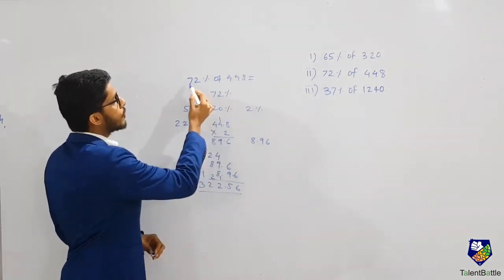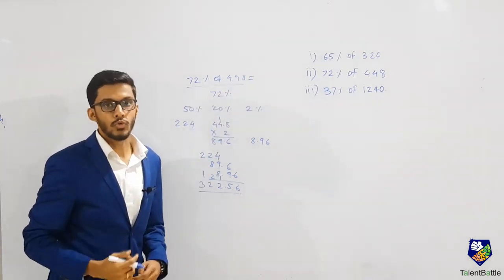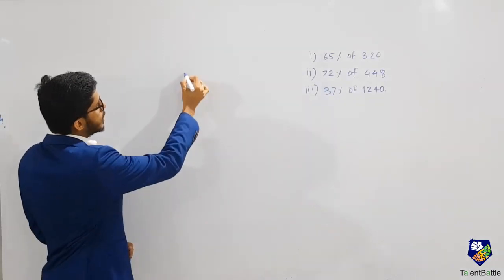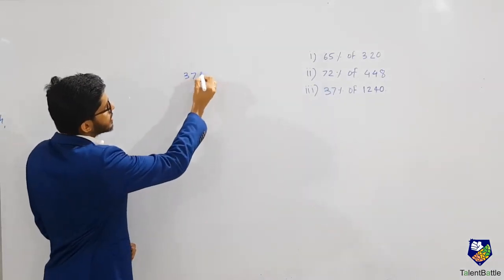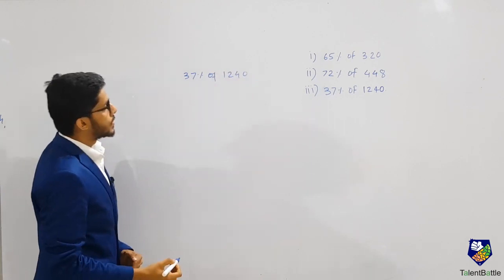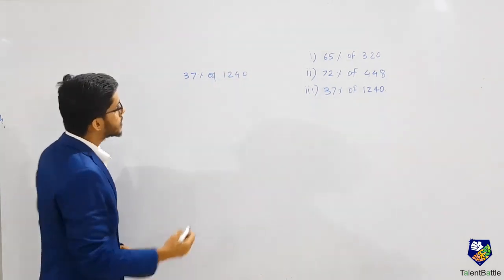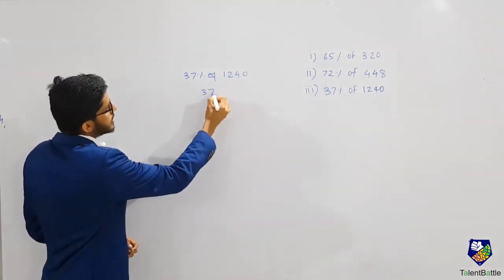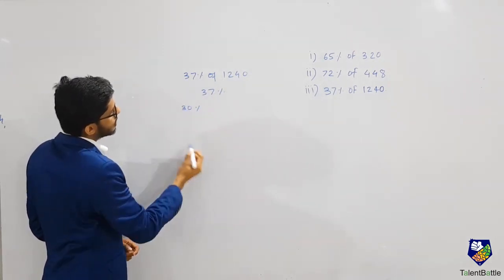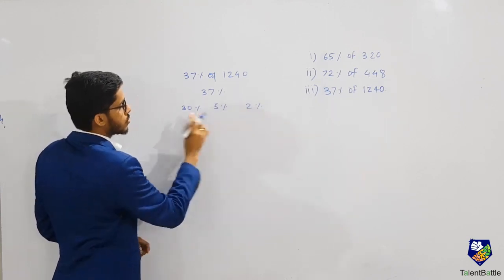You can see with this faster method you can easily get the value of such problems. Let's check one last problem with the same method. We need to find 37 percent of 1240. Again, I split the percentage into smaller parts: 30 percent, 5 percent, and 2 percent — since 30 plus 5 plus 2 equals 37.